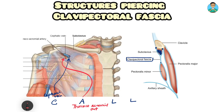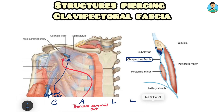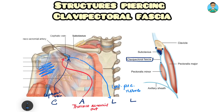The two L's: the first L represents the lateral pectoral nerve. Over here, if you can look closely, there is a yellow structure — a nerve coming out. This nerve is the lateral pectoral nerve, as it is supplying the lateral part of the pectoral muscle.